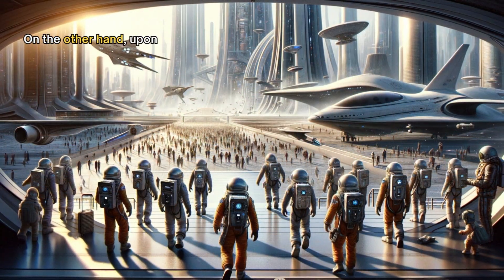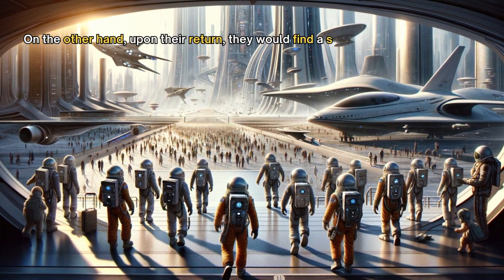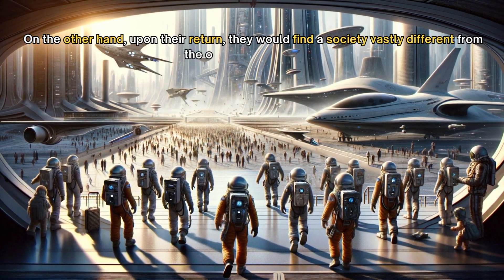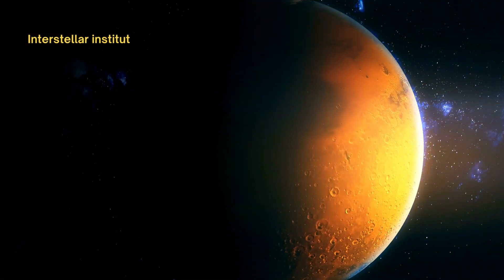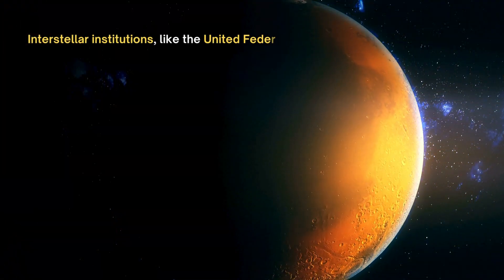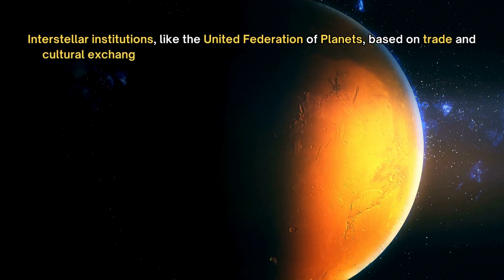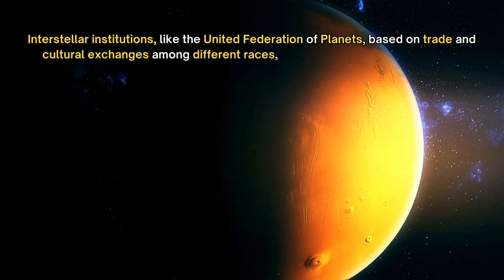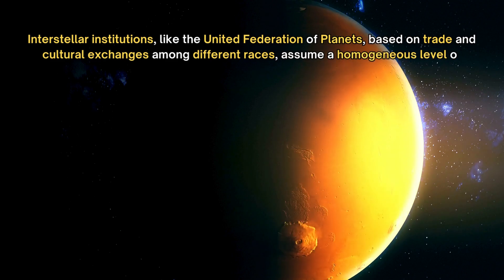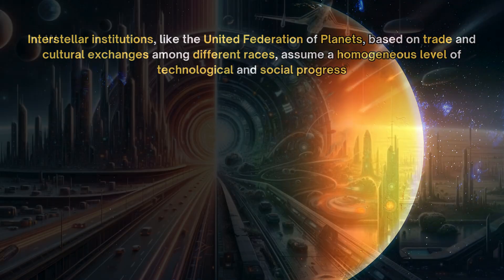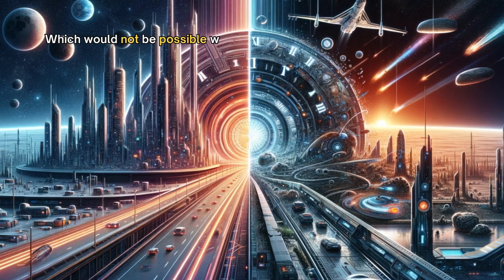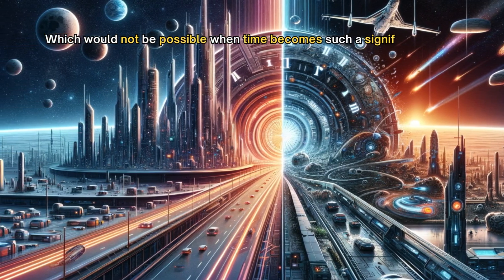On the other hand, upon their return, they would find a society vastly different from the one they left behind. Interstellar institutions like the United Federation of Planets, based on trade and cultural exchanges among different races, assume a homogeneous level of technological and social progress, which would not be possible when time becomes such a significant factor.